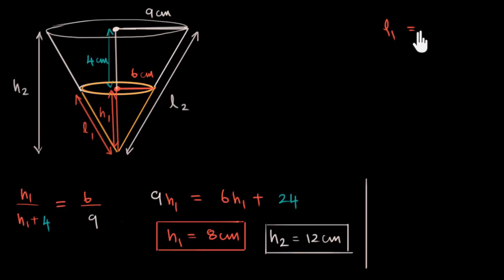l1 will be root of 6 squared plus h1 squared, which is 8 squared. And I know this is equal to 36 plus 64. Root over. And that is equal to 60 plus 30 is 90. 6 plus 4 is 10. Root of 100, which is 10. So l1 equals 10 centimeters.